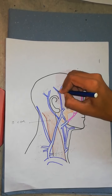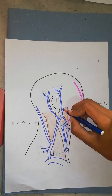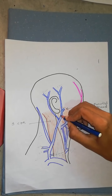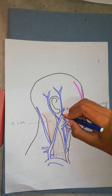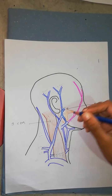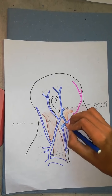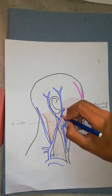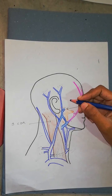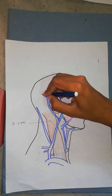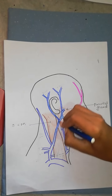This is the superficial temporal vein, which joins with the maxillary vein to form the retromandibular vein. It has an anterior division which joins with the facial vein to form the common facial vein. This is the posterior division of the retromandibular vein, which joins with the posterior auricular vein to form the external jugular vein.